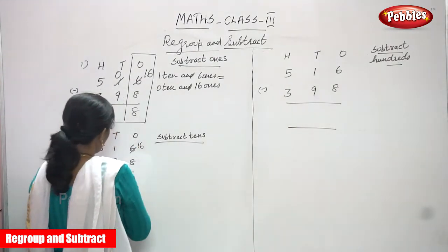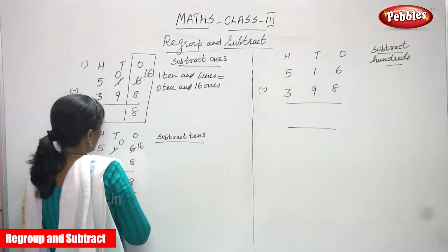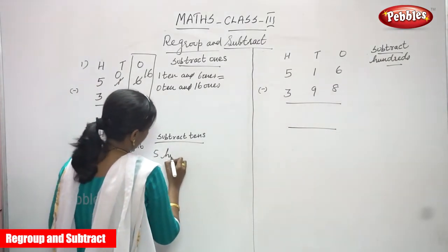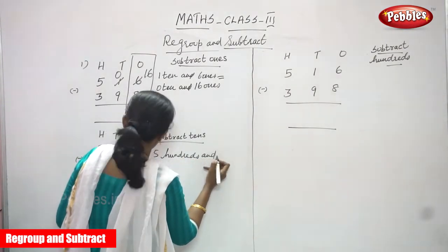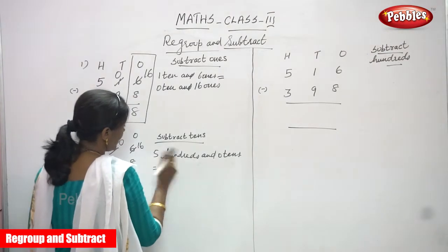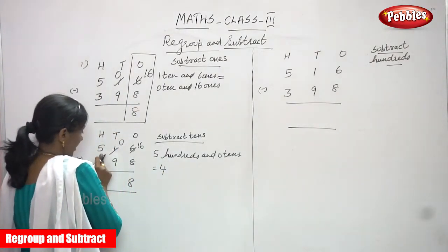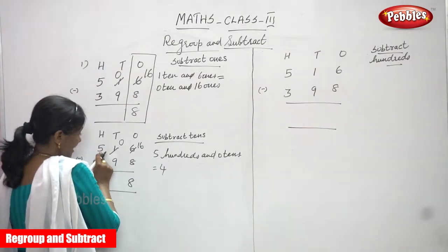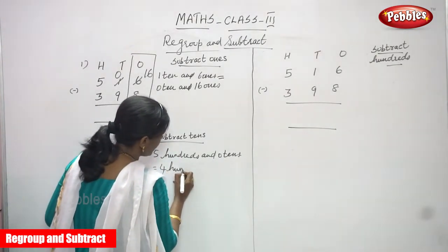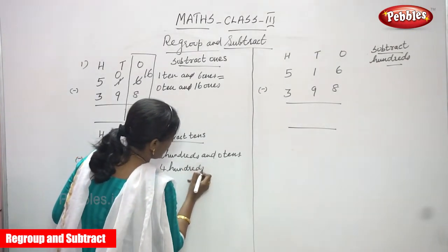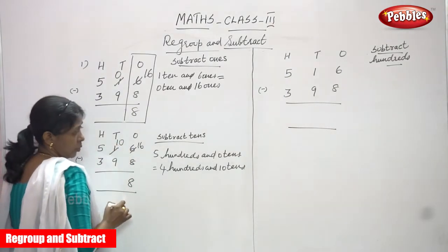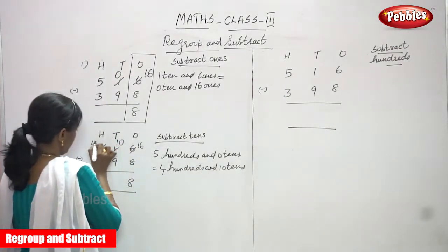In the tens place, sixteen minus eight gives eight — that one already became zero. Now I have to borrow from the hundreds. There are five hundreds. I write five hundreds and zero tens. Borrowing from the hundreds: five becomes four hundreds, and the zero tens become ten tens.